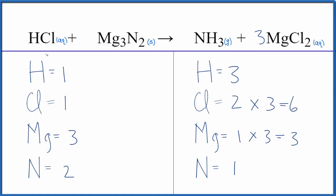So now I could put a six in front of my HCl. Well, one times six, that would give me six of those. One hydrogen times six, that would give me six of those.